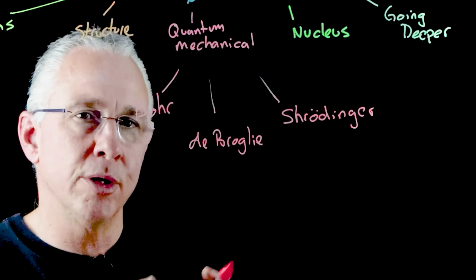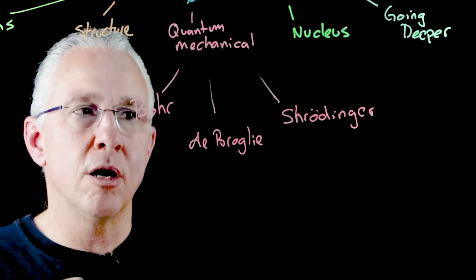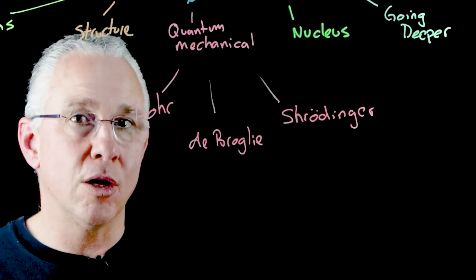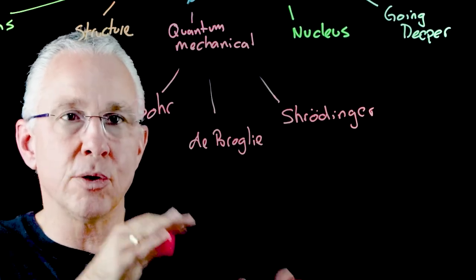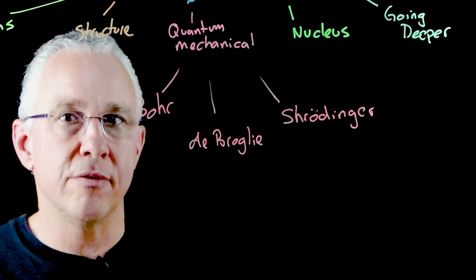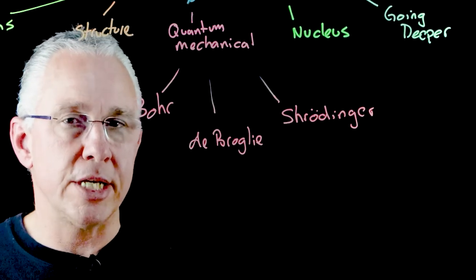We have a modification of the de Broglie model to a more robust model of what we refer to as the Schrödinger model or the electron cloud model of the atom. It is a better model than we had of Bohr, which of course was a better model than we had previously with Rutherford and J.J. Thompson.